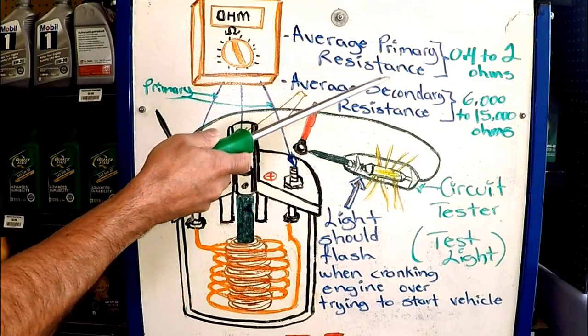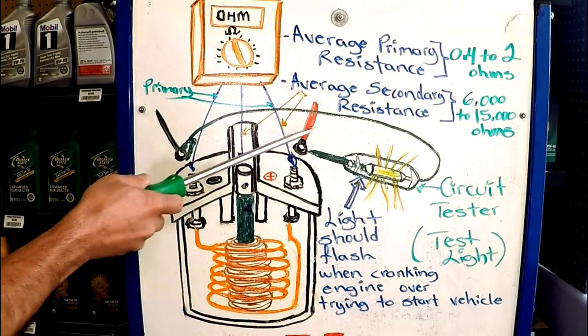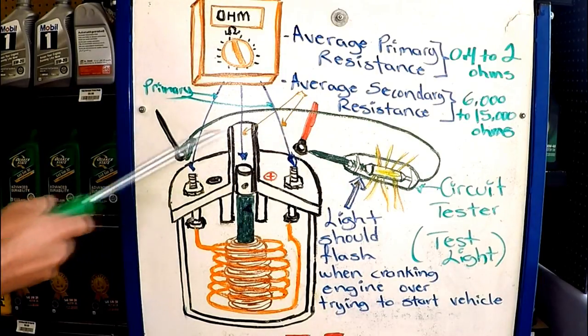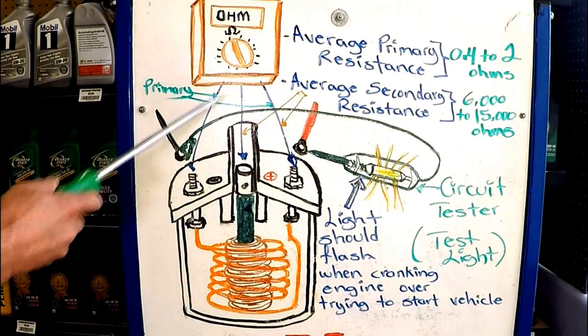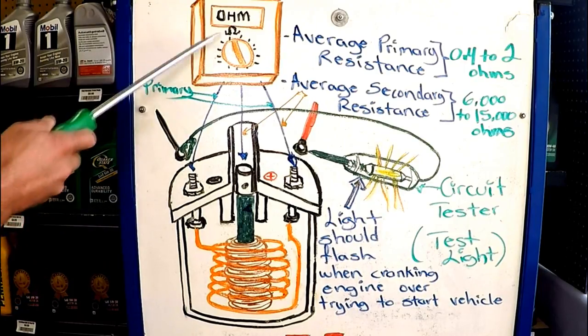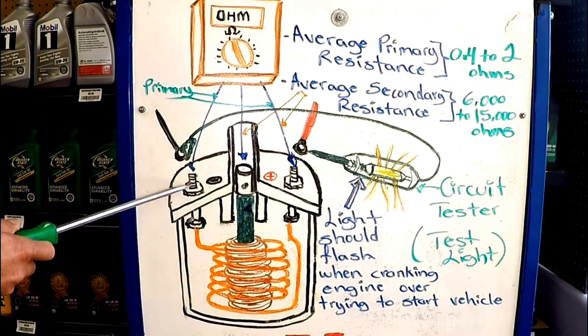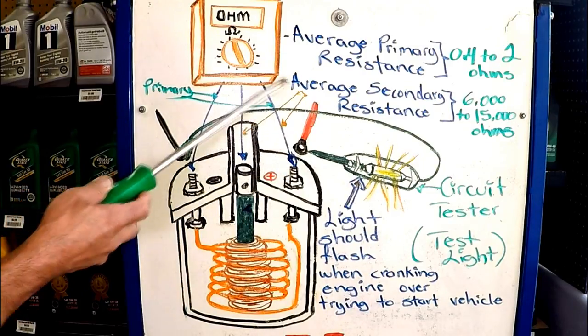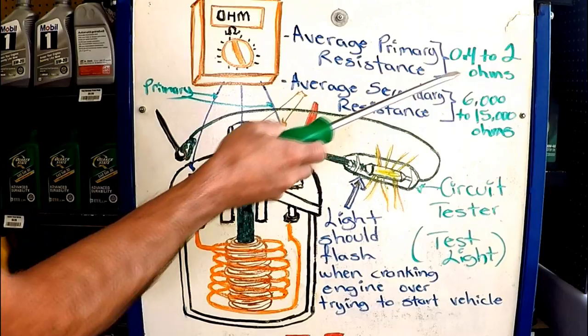So we'll start with the primary resistance. To test that you disconnect your cables that go to the coil or a plug if it has a plug, that way nothing is interfering with this reading. And you connect your negative probe of your ohmmeter to the negative and the positive to the positive. And the average resistance should be anywhere from 0.2 to 2 ohms.